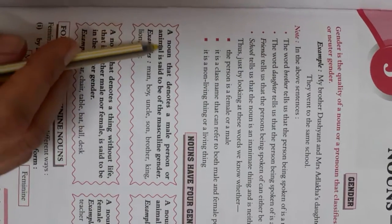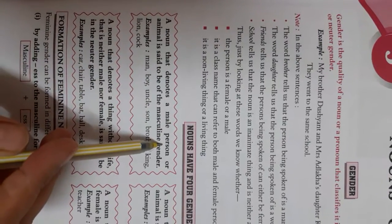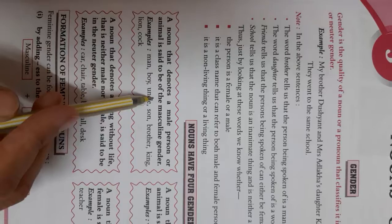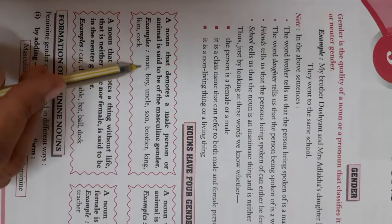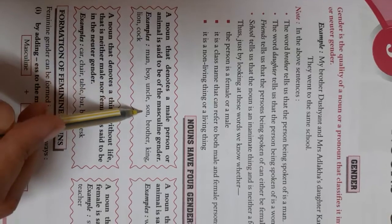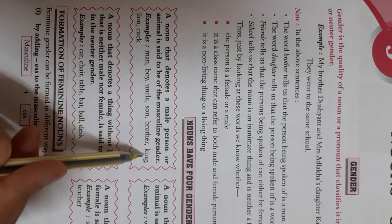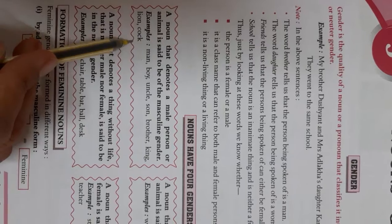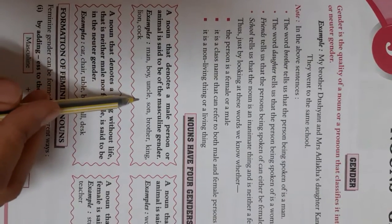A noun that denotes a male person or animal is said to be masculine gender. Man, boy, uncle, son, brother, king, lion, cock — these are all masculine gender.